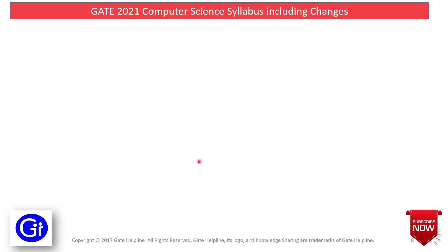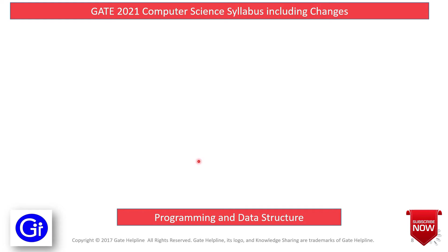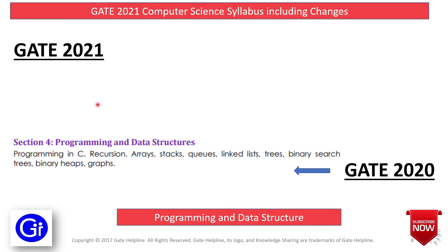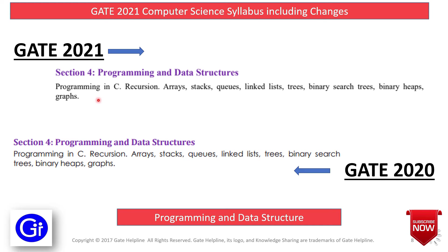The next subject is Programming and Data Structures. The GATE 2020 syllabus comprises Programming in C, Recursion, Arrays, Stacks, Queues, Linked Lists, Trees, Binary Search Trees, Binary Heaps, and Graphs. The GATE 2021 syllabus has no major difference, so there are no changes since GATE 2016.